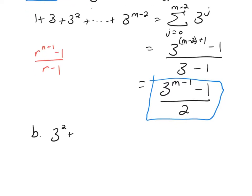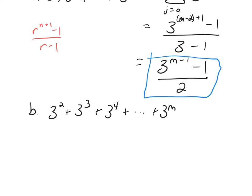Part B. 3 squared plus 3 cubed plus 3 to the 4th plus 3 to the m. Now, this is also a geometric series. This is a sum of a geometric sequence.